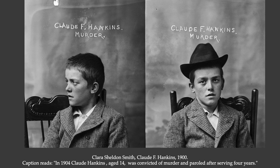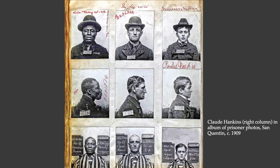The process of using photographs to document people who have been arrested and brought into the criminal justice system spread very quickly across the United States. This is a photograph of Claude F. Hankins, labeled 'murderer.' He was 14 years old when he was convicted and these photographs were taken. Claude Hankins shows up in other places in the archives of photography — this one's from San Quentin from 1909. Since photographs are of people and not just of data, they end up telling much, much more than they were originally created to record.